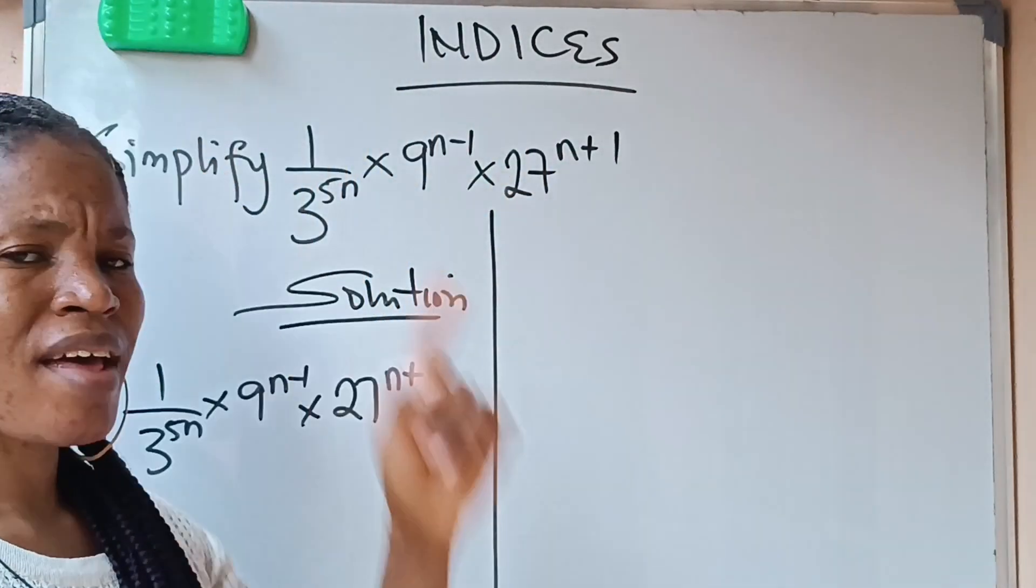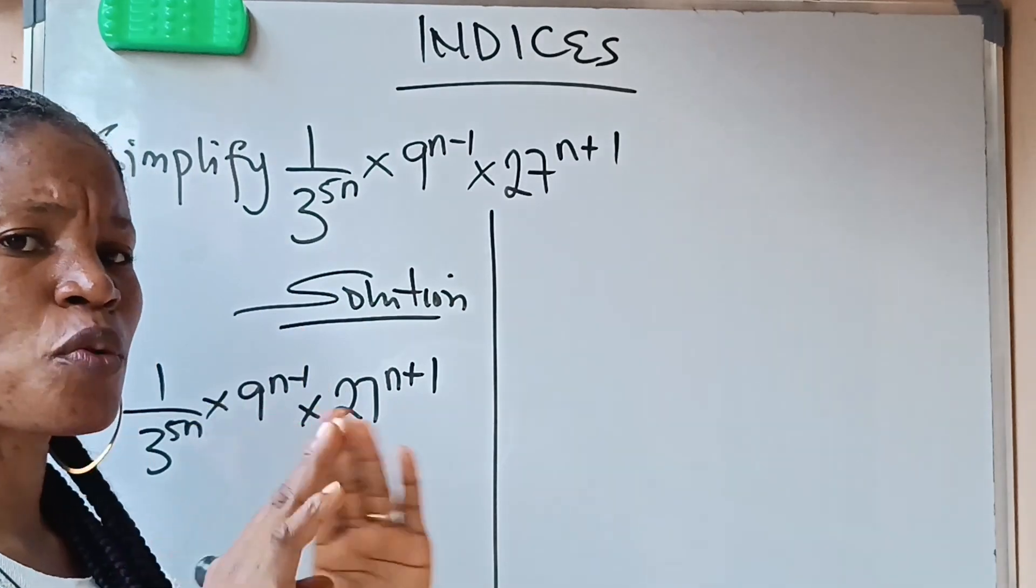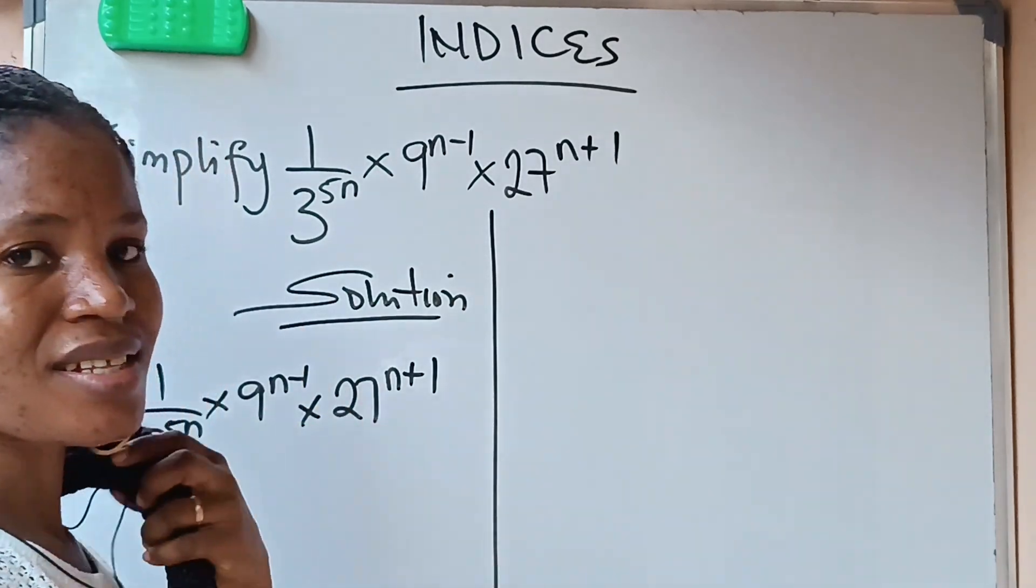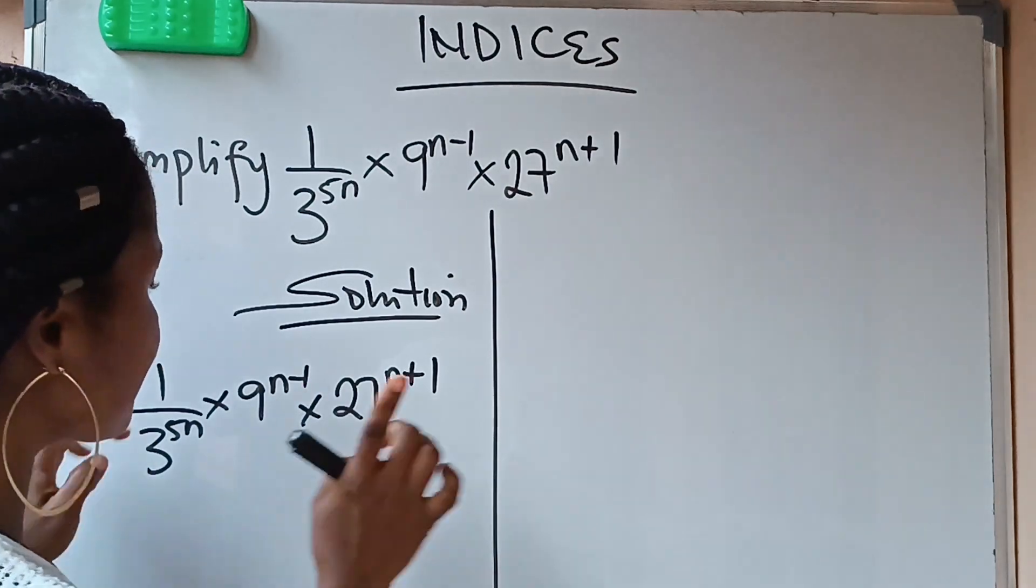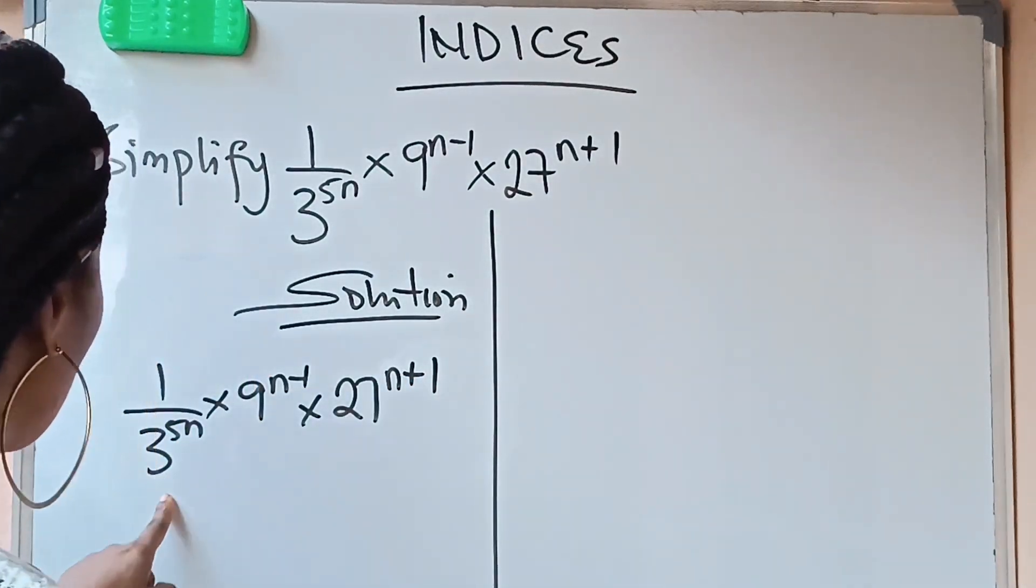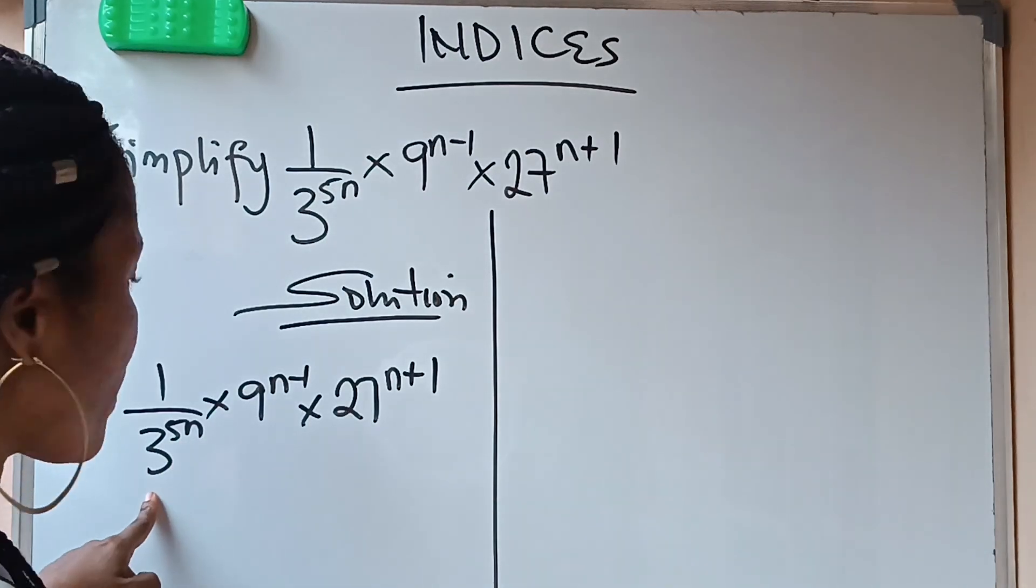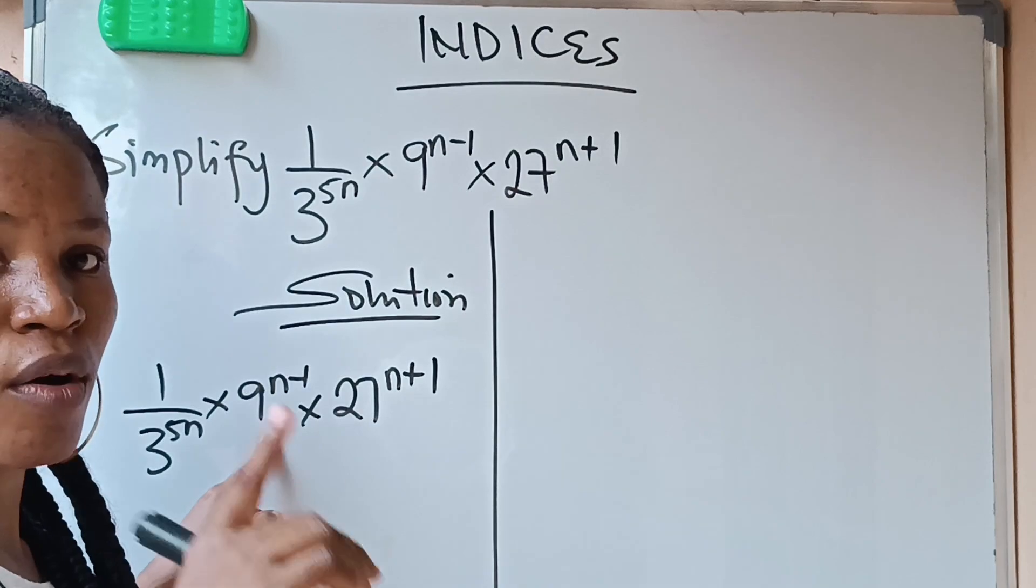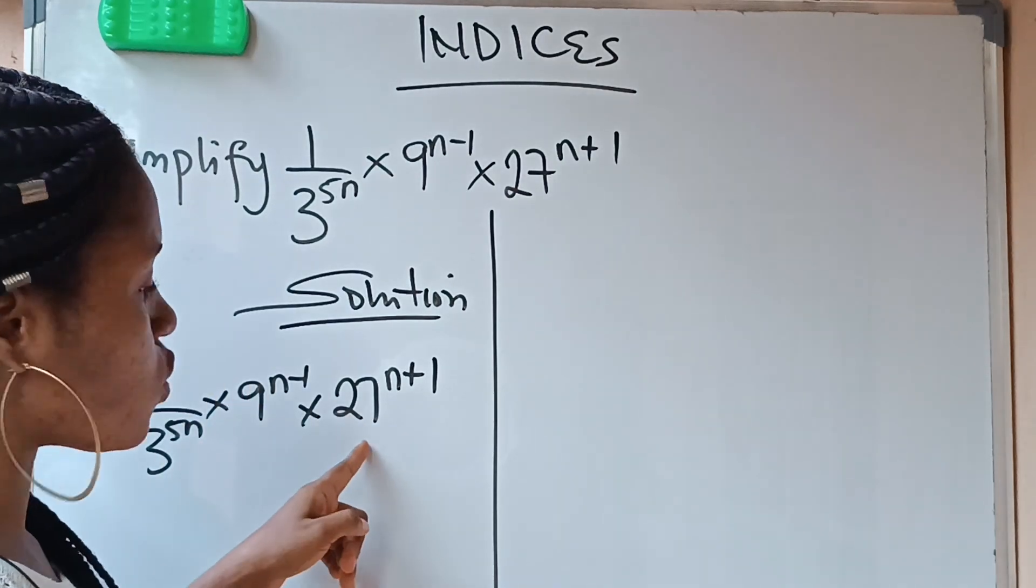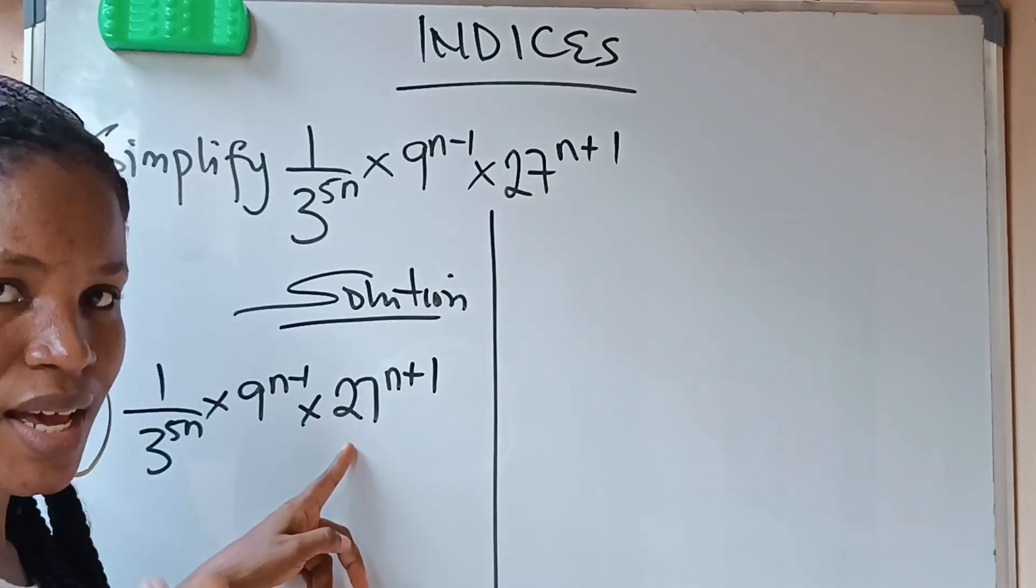first of all, this is indices. Whenever you hear indices, the first thing that you try to do is to balance the base. What does that mean? It means that try to put all of them in the same base. Looking at this now, we have 3 raised power of 5n. 3 is the lowest base here. You check, is there anything you can do to 9 to get 3 raised power of something? Is there anything you can do to 27 to get 3 raised power of something? Yes, there is.